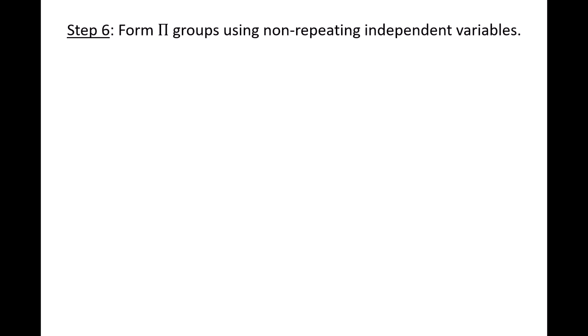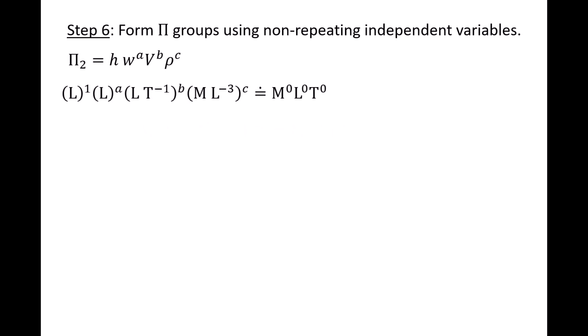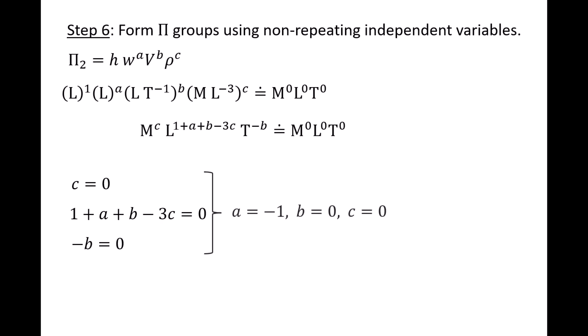Now let's find the two remaining pi groups using the two remaining non-repeating independent variables, which are h and mu. Pi 2 is equal to h times w to the a, v to the b, rho to the c. We plug in the MLT dimensions, distribute exponents, and combine terms. We get mass to the power of c, length to 1 plus a plus b minus 3c, and time to negative b. Equating exponents: c equals 0, 1 plus a plus b minus 3c equals 0, and negative b equals 0. Solving gives a equals negative 1, b equals 0, and c equals 0. Therefore, pi 2 is h over w.